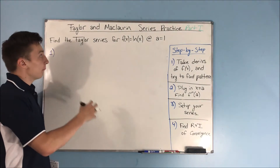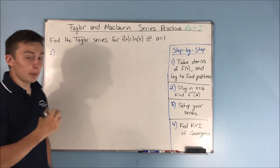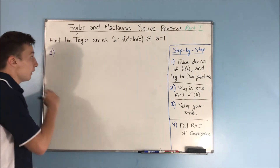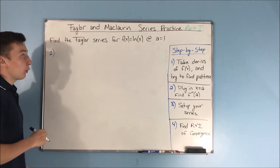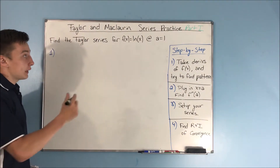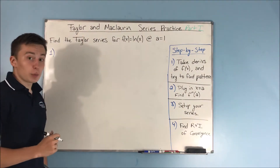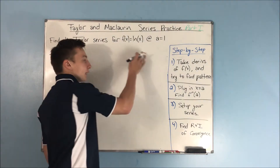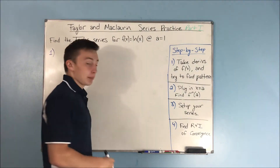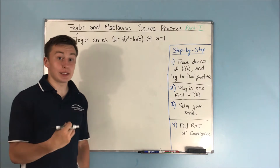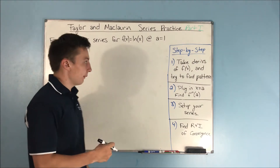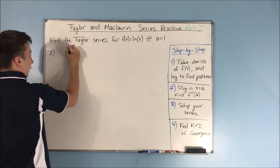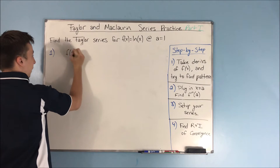This video is going to be part 1 of our Taylor and McLaurin series practice. We want to find the Taylor series for natural log of x at a equals 1. Follow our step-by-step process, and this becomes a lot simpler now that you have a sense of direction. We'll take our derivatives of f of x and try to see a pattern.